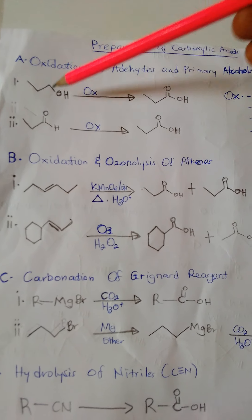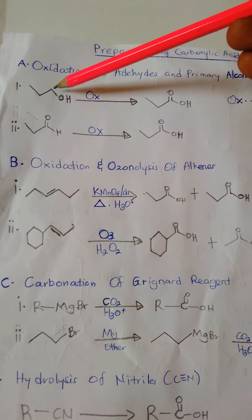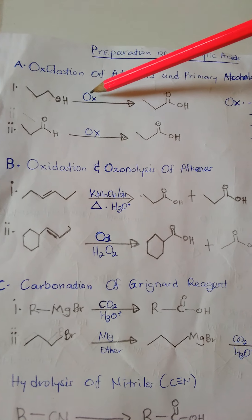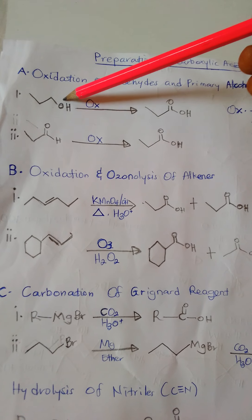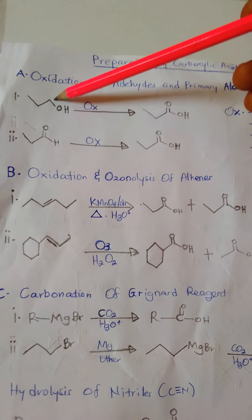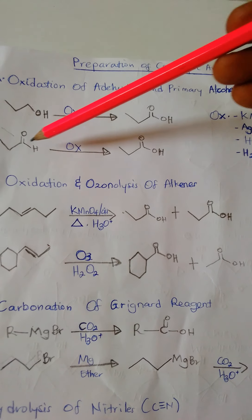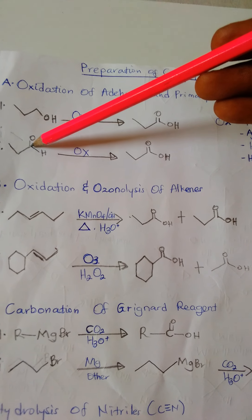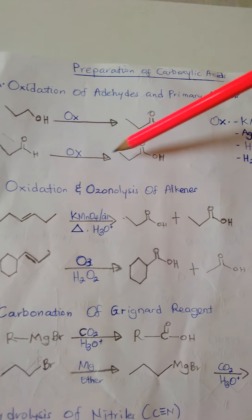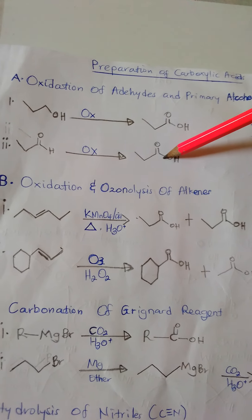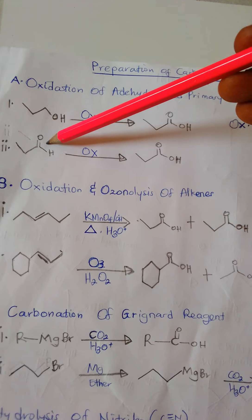Let's look at an example. This is a primary alcohol containing three carbons. When you add an oxidizing agent, it will oxidize this and convert this alcohol functionality to a carboxylic acid group. The same thing applies to an aldehyde — an aldehyde plus an oxidizing agent will convert the aldehyde portion to a carboxylic acid group.